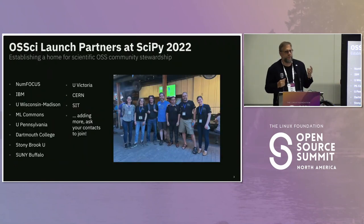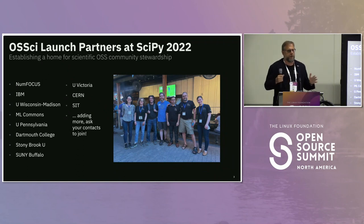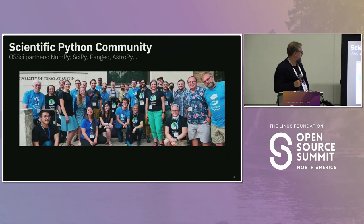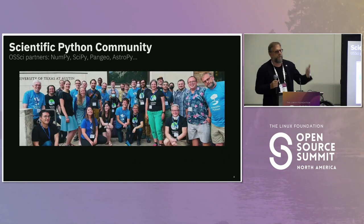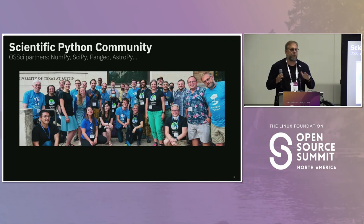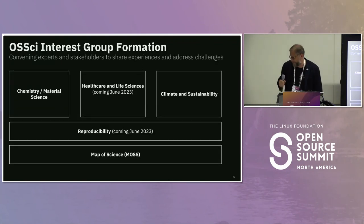We launched at SciPy in Austin with NumFocus, and we have several organizations that support us as launch partners. It's not a formal structure with membership fees — we run as a purely volunteer organization. The Scientific Python community at NumFocus is a very close partner — all those folks develop Python for science and overlap with our goals. We also want to be the glue for organizations like Pangeo that want to advance science through open source in different ways. Being at NumFocus gives us a very good vantage point.